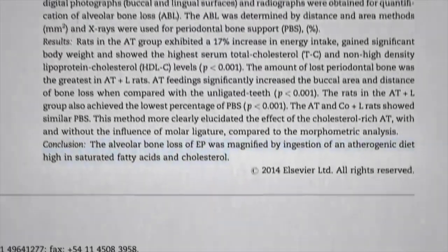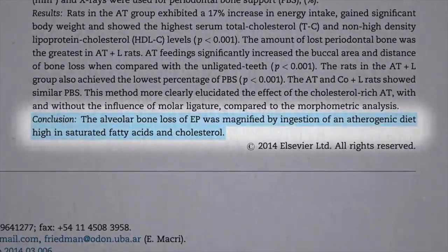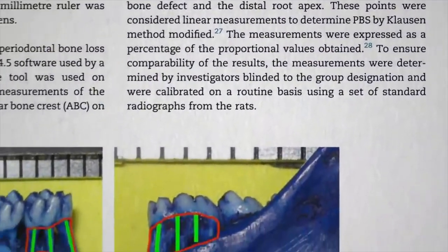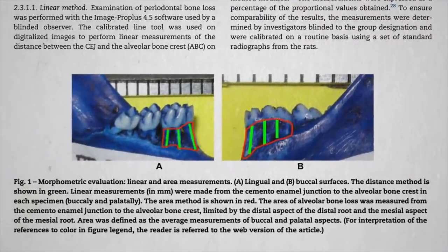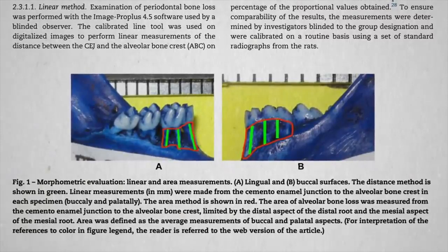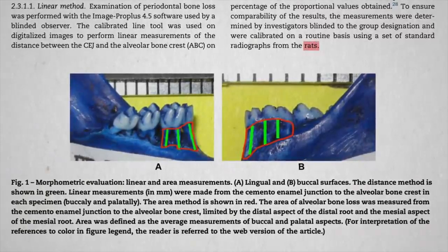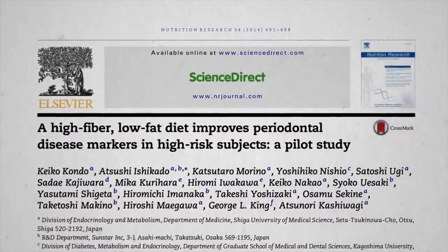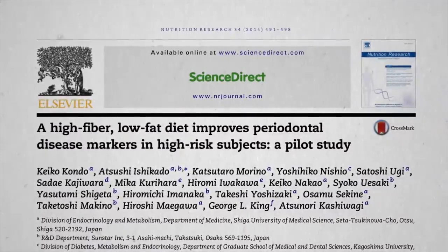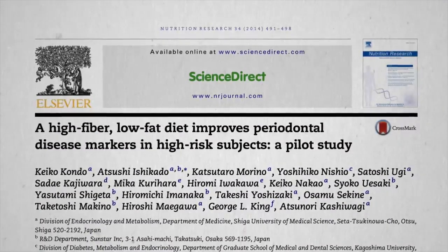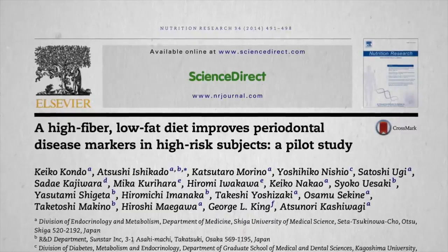Bone loss was indeed magnified by a diet high in saturated fat and cholesterol — but if you're thinking that's a weird-looking jaw, that's because it was a study done on rats. This is what I was looking for: though the title kind of ruins the suspense, a high-fiber, low-fat diet improves periodontal disease markers.